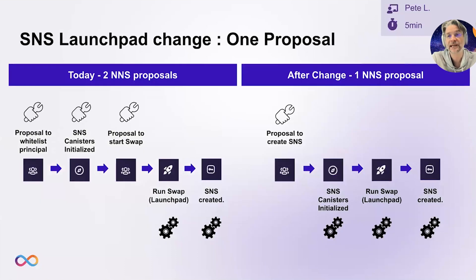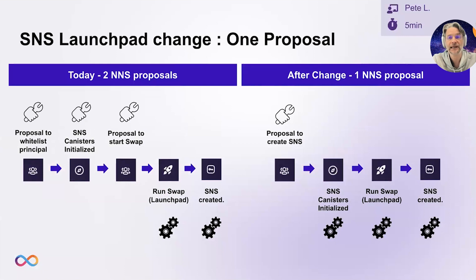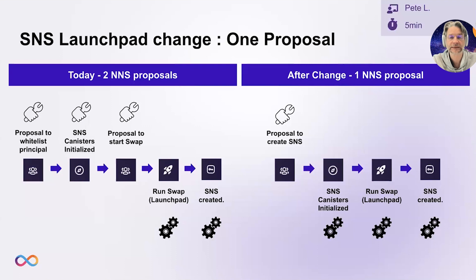Moving on to some of the changes being proposed for the SNS launchpad. The first change is what's been called the one proposal change. When OpenChat SNS was launched, you may have noticed that there were actually two NNS proposals and a manual process of initializing the SNS canisters in between. The first proposal was to grant permission to a principal to install those initialized canisters, whilst the second proposal was the main proposal to run the swap. In the new world, it's proposed to reduce this to a single NNS proposal which, if accepted, will automate all the subsequent steps: initializing the SNS canisters, running the swap, and then creating the actual SNS at the end.